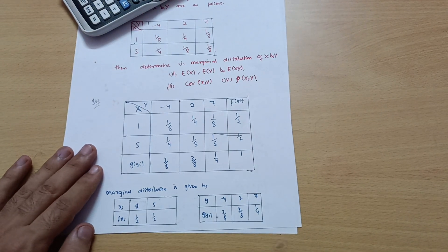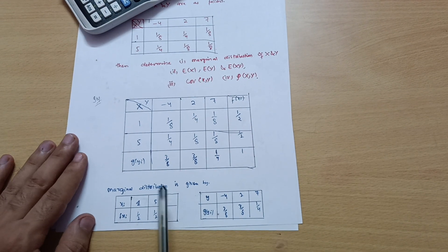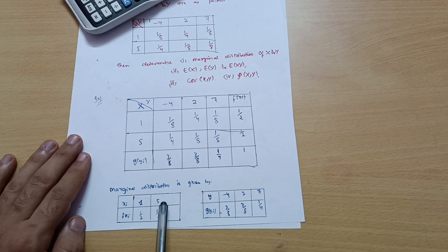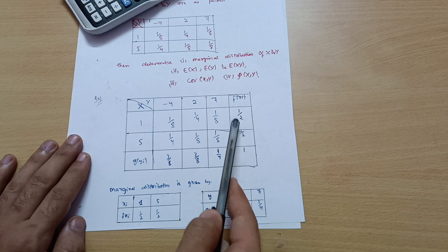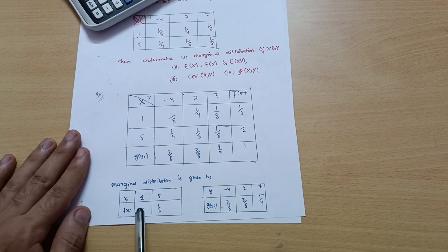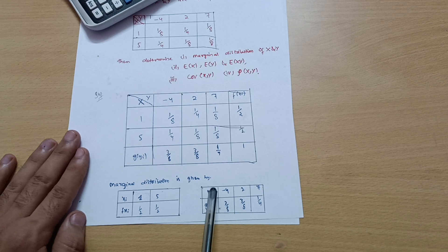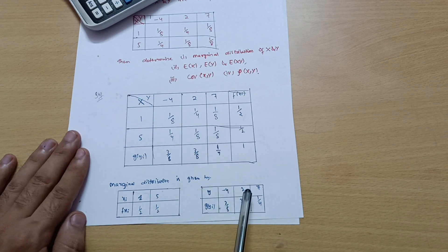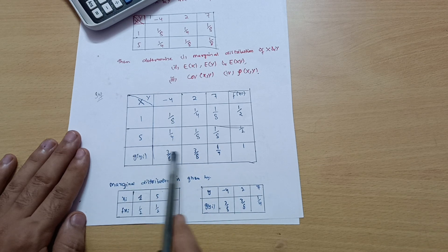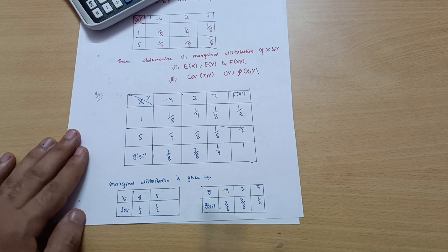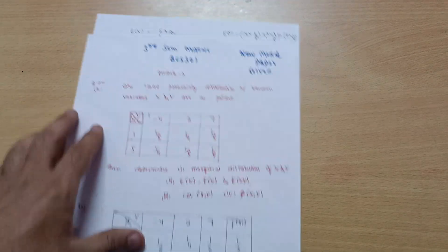Now we draw the marginal distribution table. For X, the values are 1 and 5, with corresponding f(xᵢ) values of 1/2 and 1/2 — the row summations. For Y, the values are -4, 2, and 7, with corresponding g(yᵢ) values of 3/8, 3/8, and 1/4 — the column summations. This is the marginal distribution table.